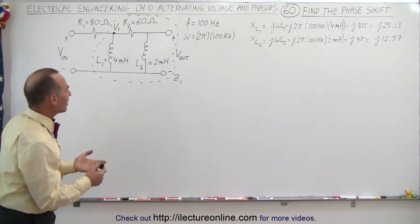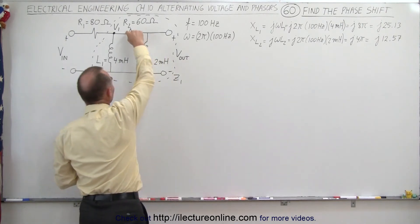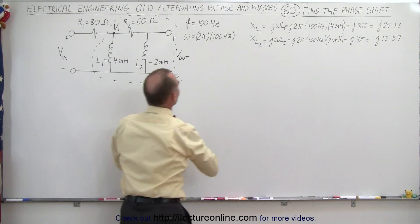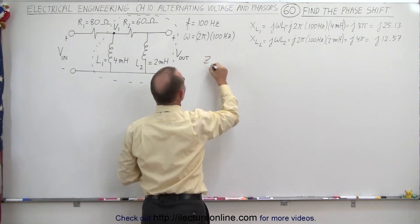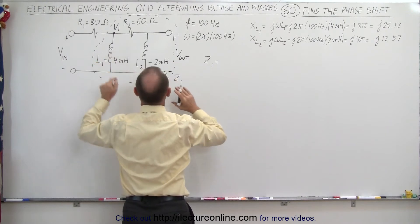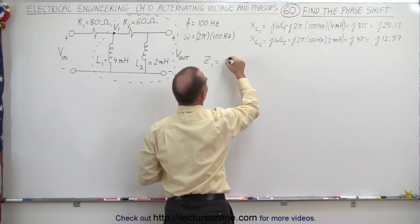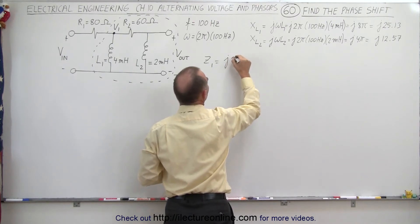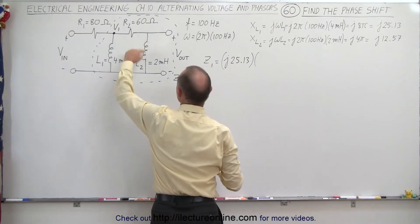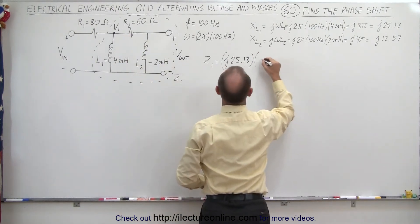Let's start by finding the impedance Z1. To do that, we have these two in series, and that's in parallel with this right here. So the impedance Z1 is equal to the product divided by the sum. Here we have L1 — the reactance of L1 is J25.13. We multiply that times the impedance of these two in series, so that would be 60.